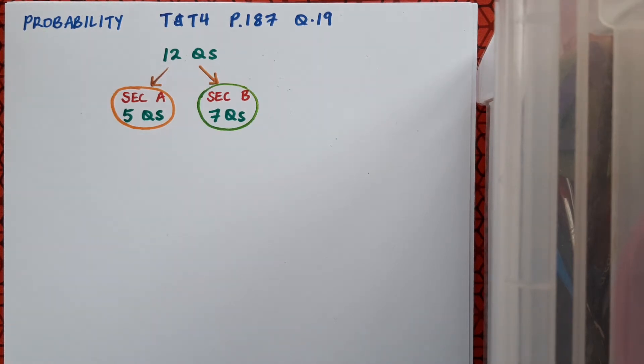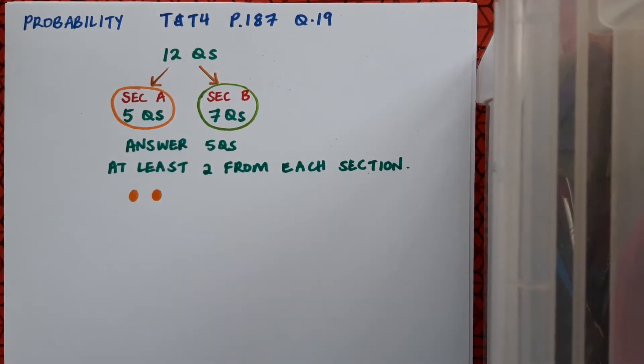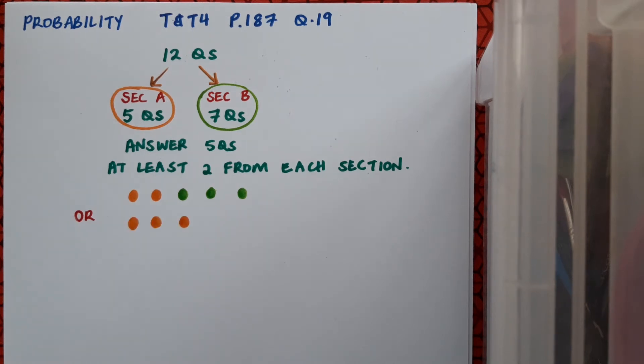Let's see all the different ways we can answer five questions while making sure to answer at least two from each section. If I answer two questions from section A, represented by these two dots, then I must answer three from section B. That's one option, but there are others. I could answer three questions from section A, in which case I'd answer two from section B.